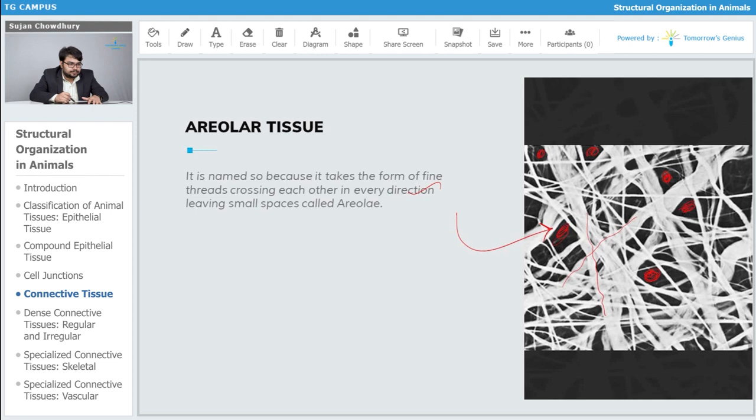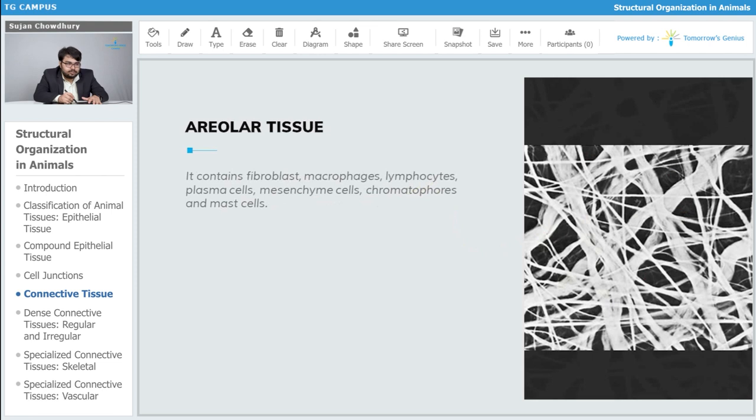It contains fibroblasts, macrophages, lymphocytes, plasma cells, mesenchyme cells, chromatophores, and mast cells. These are the several types of cells which make up the areolar tissue system, which is an example of our connective tissue system network in the body.